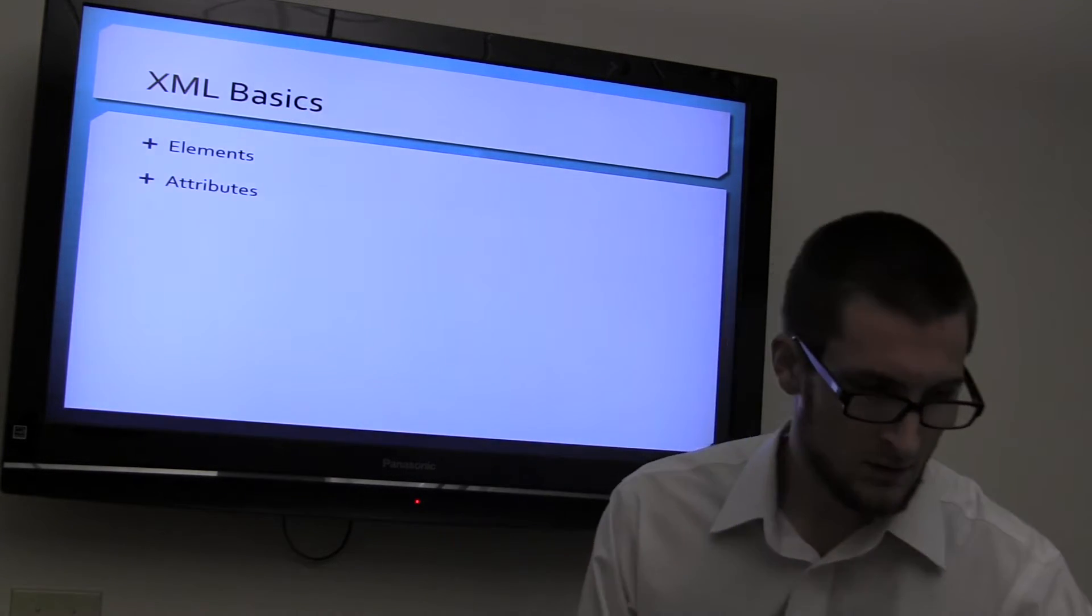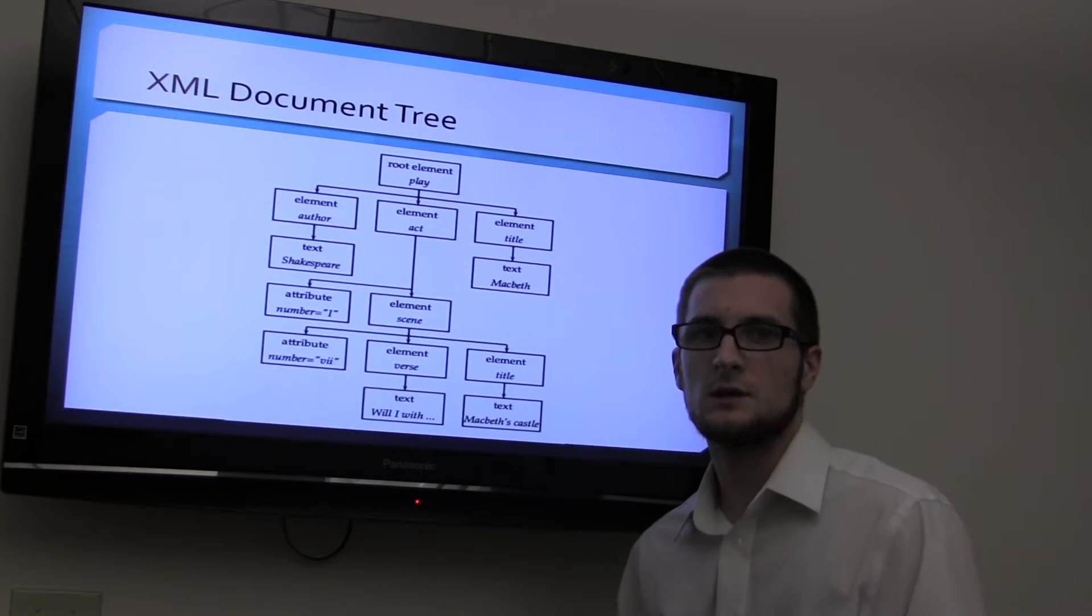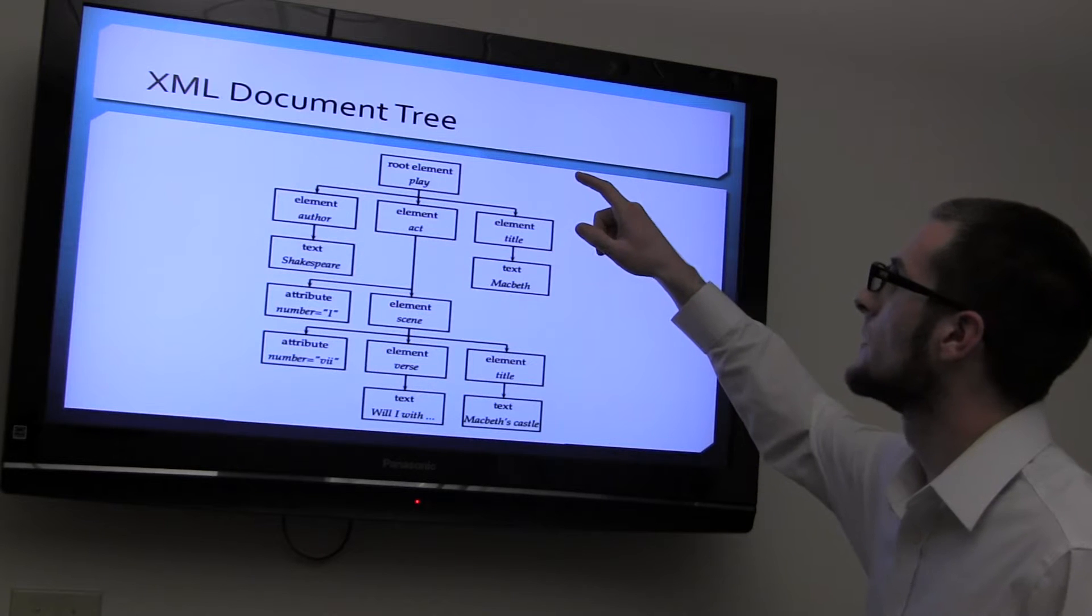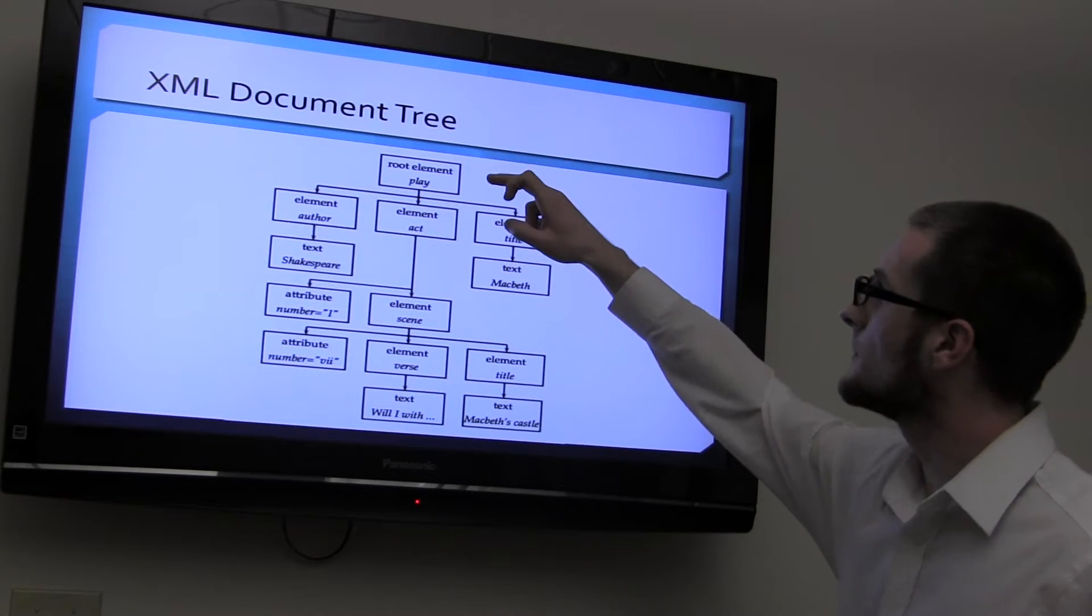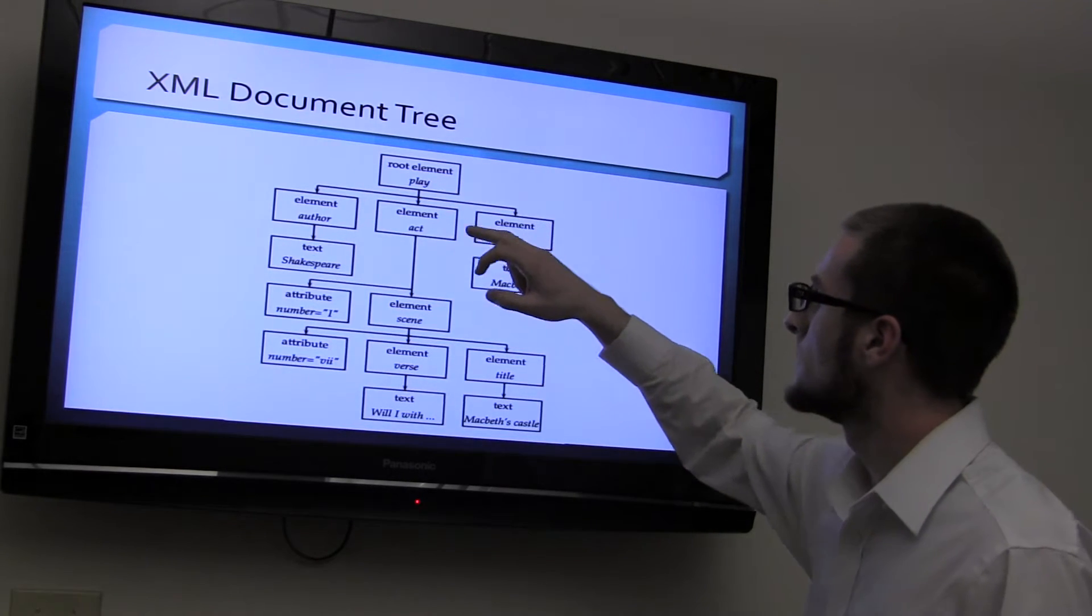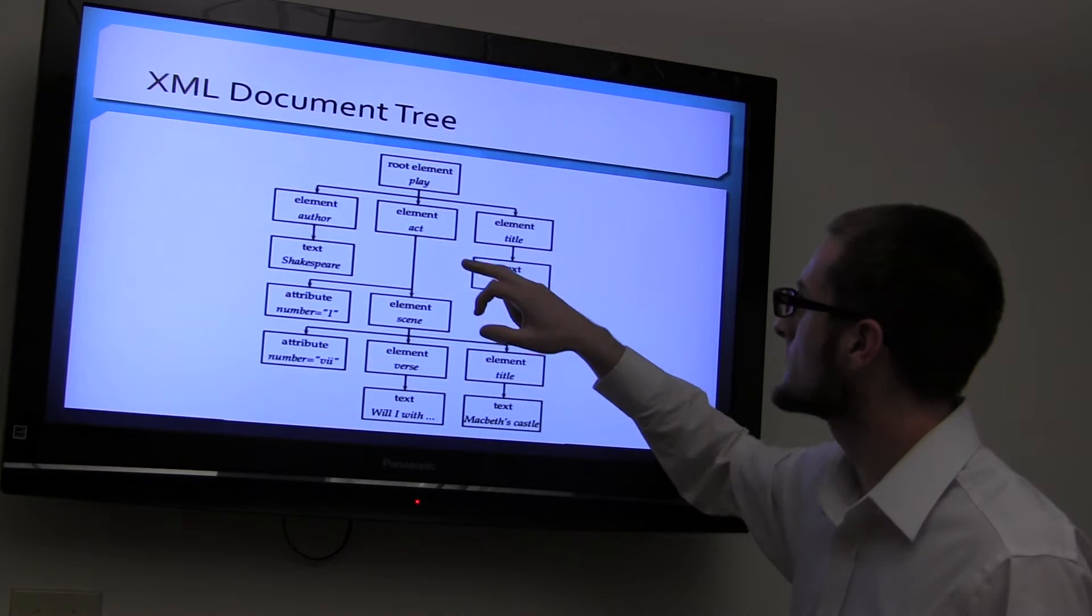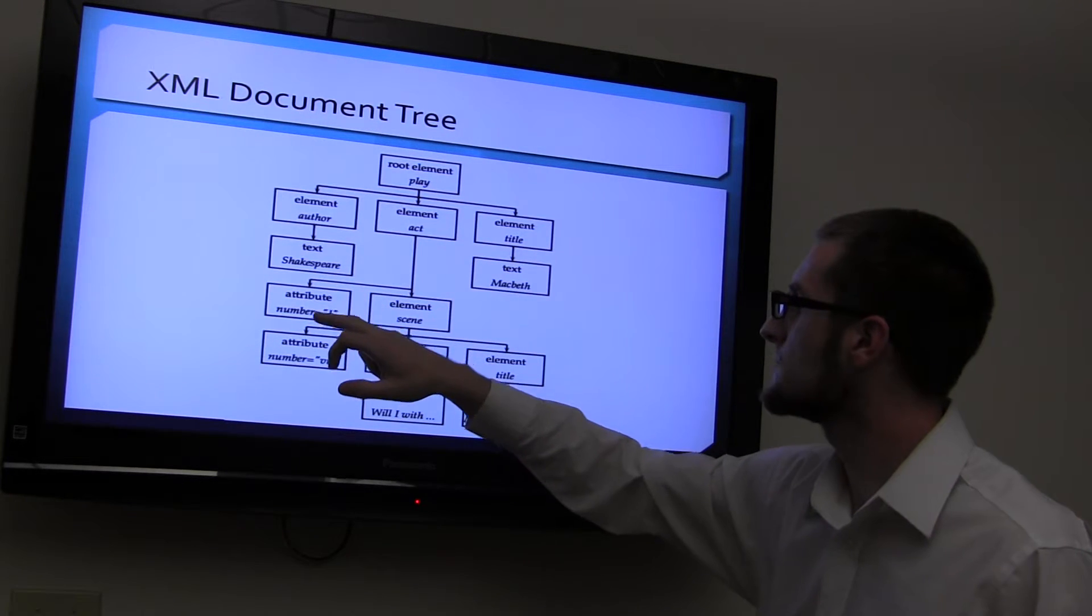This is going to be a document tree. This is the structure for all XML files. They have a root element at the top, and they get broken down into the elements, and then each element gets broken down more and more into text, and you see how this element has an attribute.